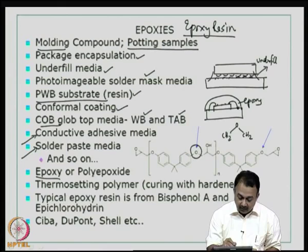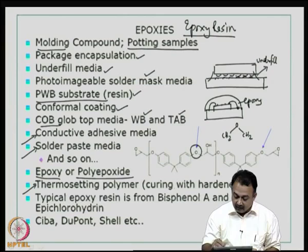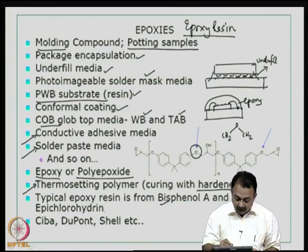Being a thermosetting polymer means that once you heat it or cure it above a particular temperature, it is very difficult to bring it back to its original state. This curing is normally done with the use of some kind of a hardener, which will change the properties of the material. For the substrate that I showed recently, the epoxy resin is basically from a combination of bisphenol A and epichlorohydrin, which in the next slide I will show as the actual reaction taking place.